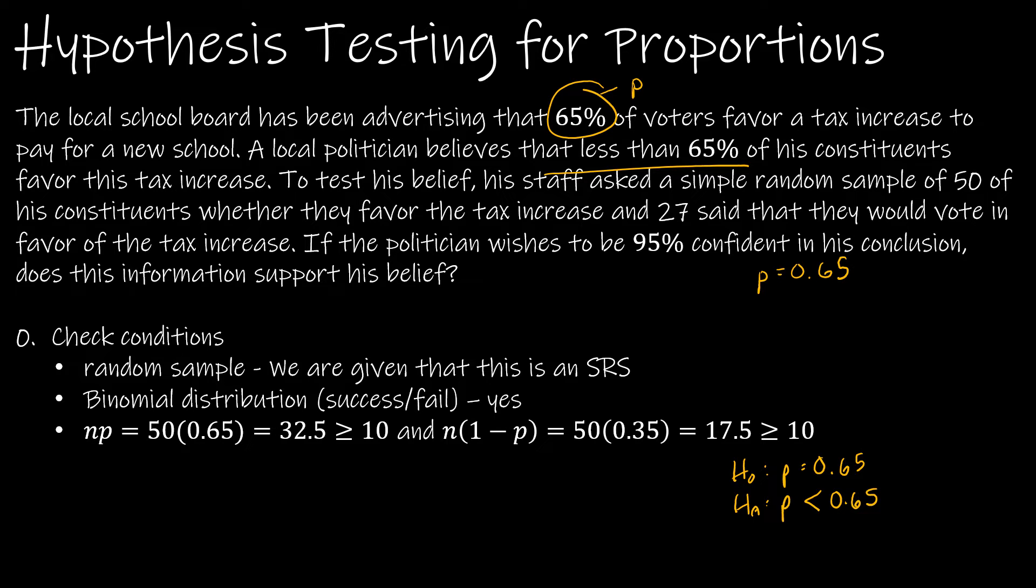To test his belief, his staff asked a simple random sample (SRS checks this box) of 50 constituents, so n equals 50, whether they favor the tax increase. And 27, which is x, said that they would vote in favor. Now as a reminder for proportions, we've got three values that are all related: n, x, and p-hat. p-hat is x over n. So in this case, 27 divided by 50 would give me 0.54.